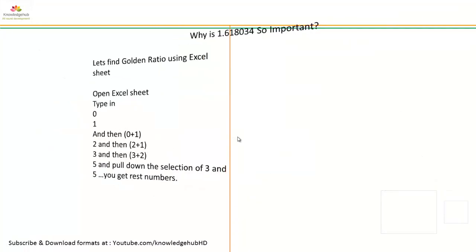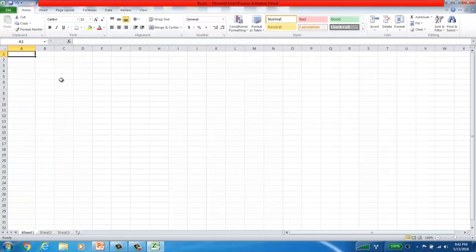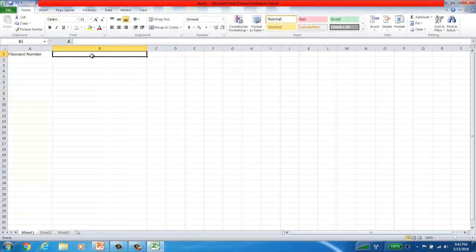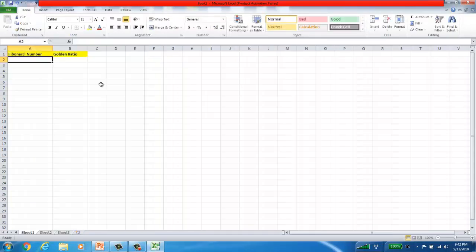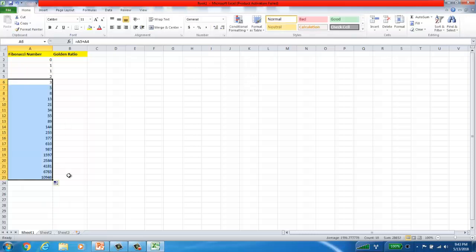Let's find golden ratio using Excel sheet. Open an Excel sheet and write down Fibonacci number and golden ratio or Fibonacci ratio. The very first number is zero, then one. These are two initial Fibonacci numbers. So if I add this one plus previous zero, it gives me one. Again, if I add this number plus previous number, it gives me two. Again I repeat the formula: this number plus previous number gives me three. So if I keep repeating this formula, I get the Fibonacci numbers.